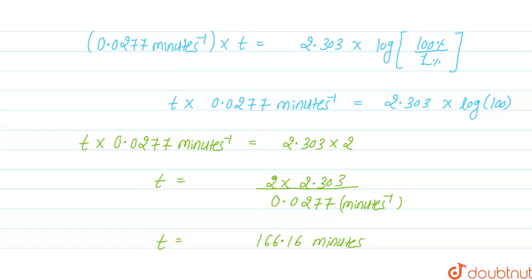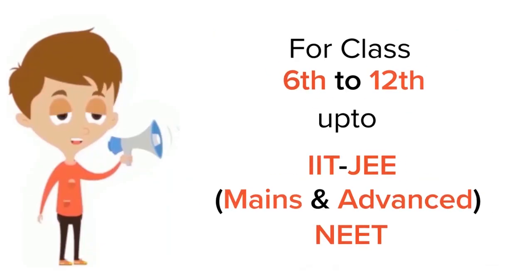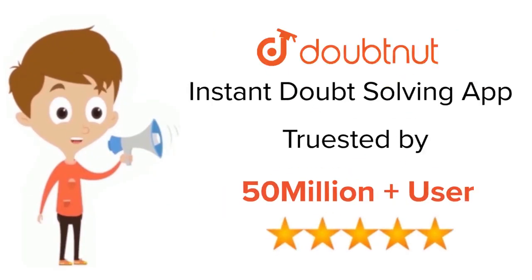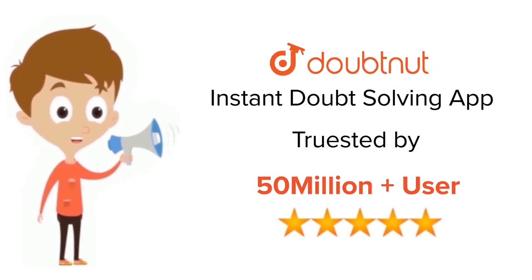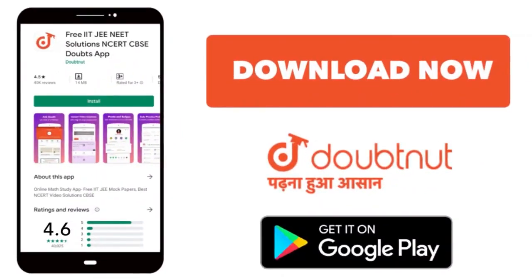So the time required for 99% completion of the reaction is 166.16 minutes. I hope this answered your question. Thank you. For class 6 to 12, IIT-JEE, and NEET level — trusted by more than five crore students — download the DoubtNet app today.